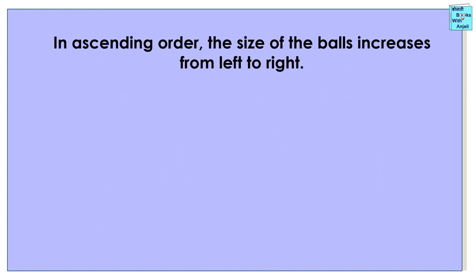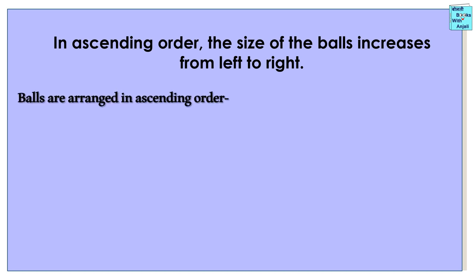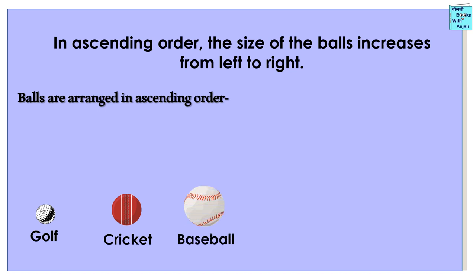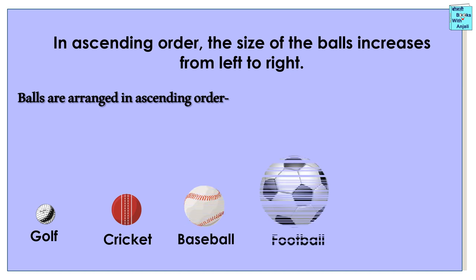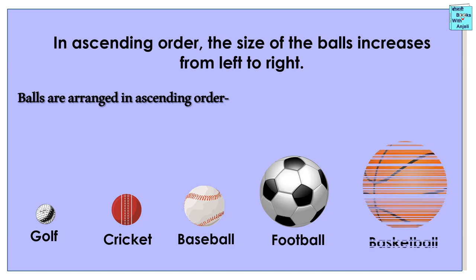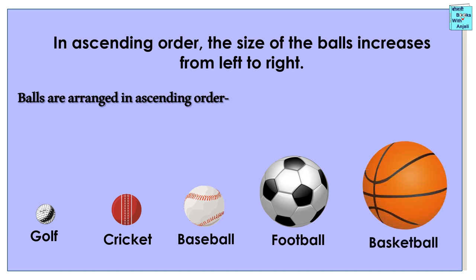In ascending order, the size of balls increases from left to right. First is the smallest golf ball. Next comes cricket ball. Next is baseball. Followed by football. And the biggest is basketball.